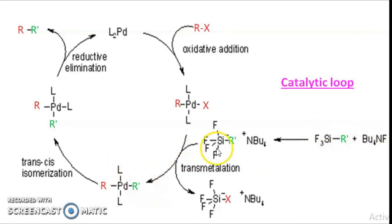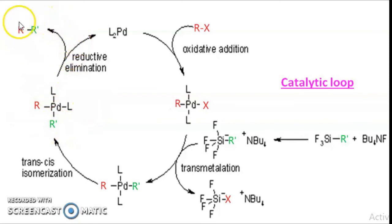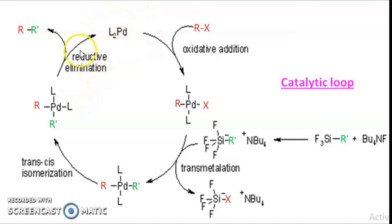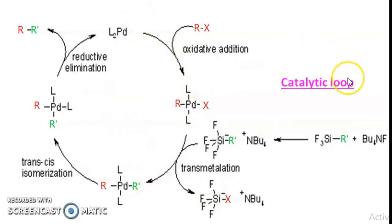After addition of the alkyl group to the palladium, cis-trans isomerization occurs with rearrangement, then reductive elimination forms the carbon-carbon bond to give another organic moiety. The catalyst is regenerated and brought back from plus two oxidation state to zero oxidation state. This completes the catalytic loop for Hiyama coupling.